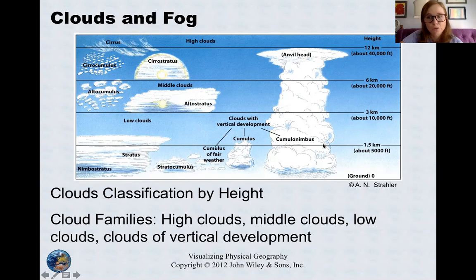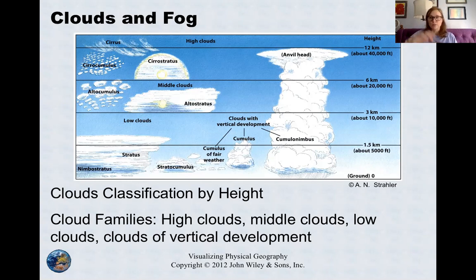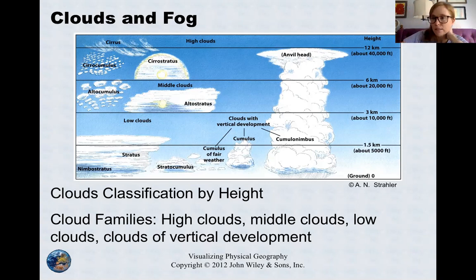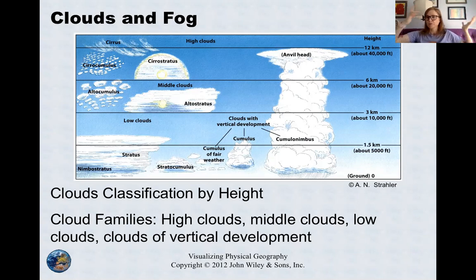The cumulonimbus cloud is your stormy cloud, your thundercloud, the cloud that gets lightning. Cumulus means fluffy pile and nimbus means rain, so it's going to be a fluffy rain cloud. Cumulonimbus clouds usually go through multiple layers of the atmosphere — they start at a low level and go all the way up to high-level clouds. Cumulus clouds are also called fair weather clouds — the kind you'd see at a picnic or draw as a kid.